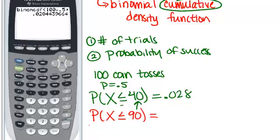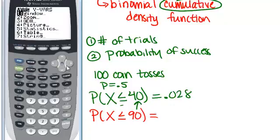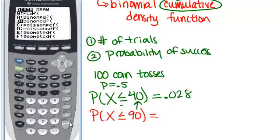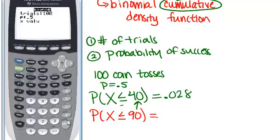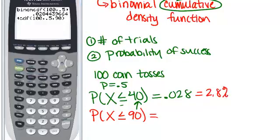We'd want to go back into our menu and find the binomial cumulative density function button. And we're going to only just change this last number and make it be 90 and go down to paste. Now, before we hit enter, you should think about, do you expect this number to be bigger or smaller? This was the probability, it was about 2.8% chance that we would get 40 or less heads. That's not very much. Do you think it will be bigger or smaller?